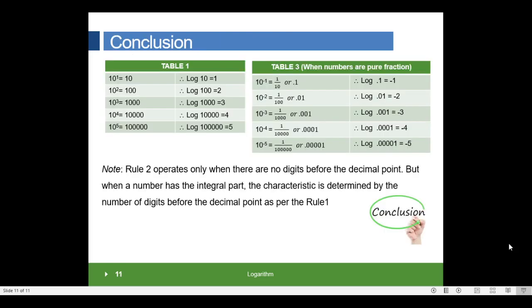To conclude, Rule 2 operates only when there are no digits before the decimal point. But when a number has an integral part, the characteristic is determined by the number of digits before the decimal point, as per Rule 1. Thank you.